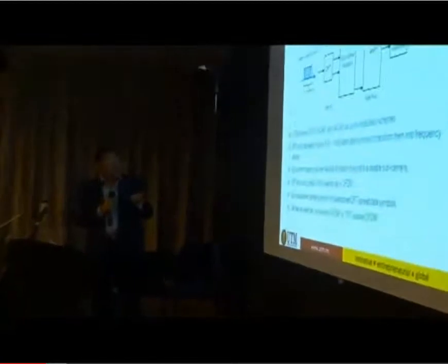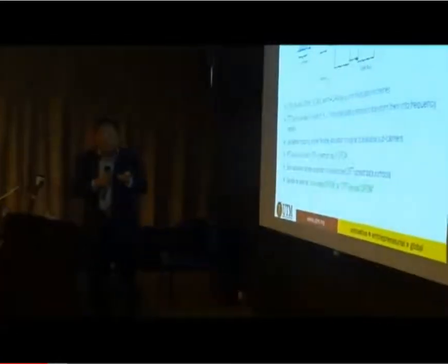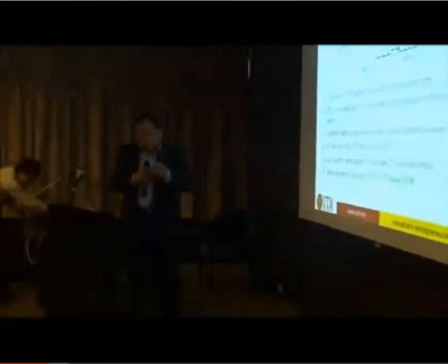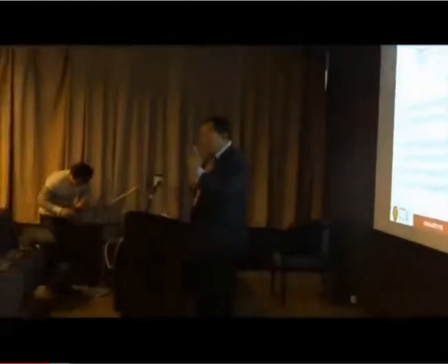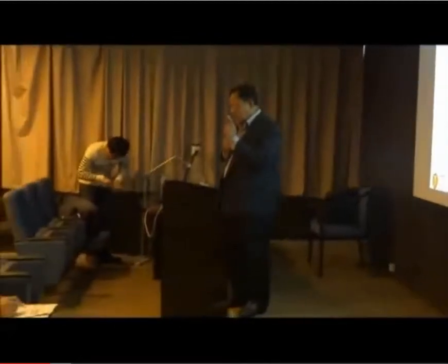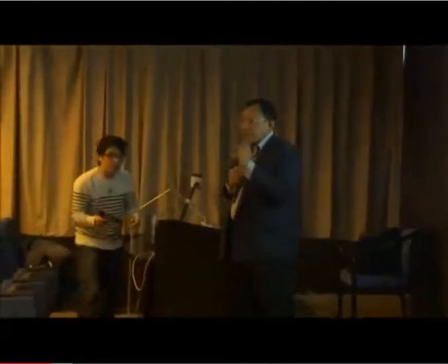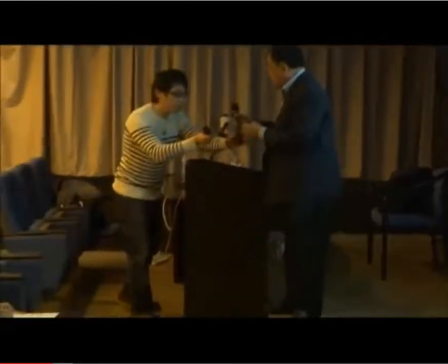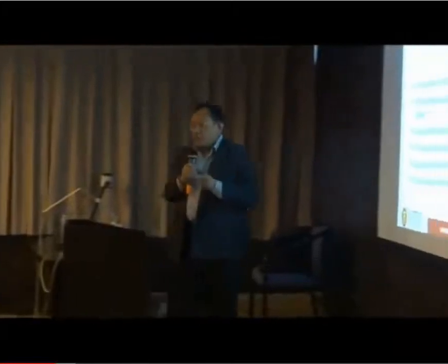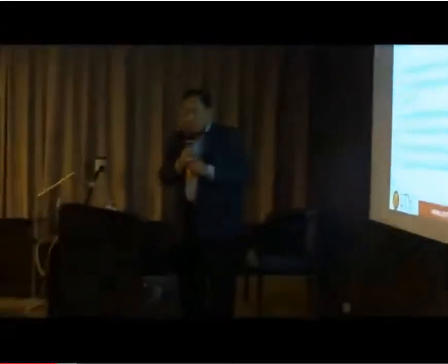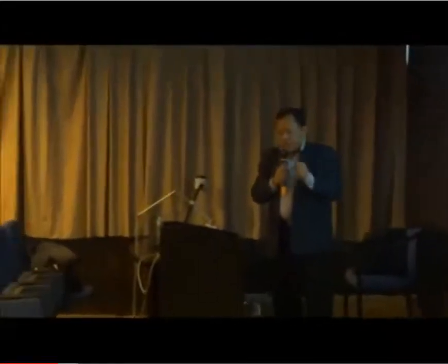Subcarrier mapping allows flexible allocation of signals to subcarriers. In OFDMA, every subcarrier carries one symbol. But in single carrier FDMA, subcarriers can contain many symbols, spread out over a number of subcarriers. That's why it is called single carrier.